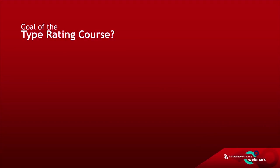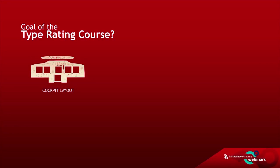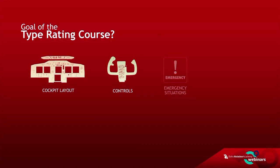After completion of the type rating course, the student shall be able to demonstrate knowledge of the cockpit layout and the controls and indicators used during operation of the aircraft. They should know the effect of all controls, the conditions under which they should be operated, and what impact the operation will have on the aircraft and its various systems. Students must also recognize all emergency situations and warnings, and demonstrate the ability to find and complete procedures specified or not in the checklist.